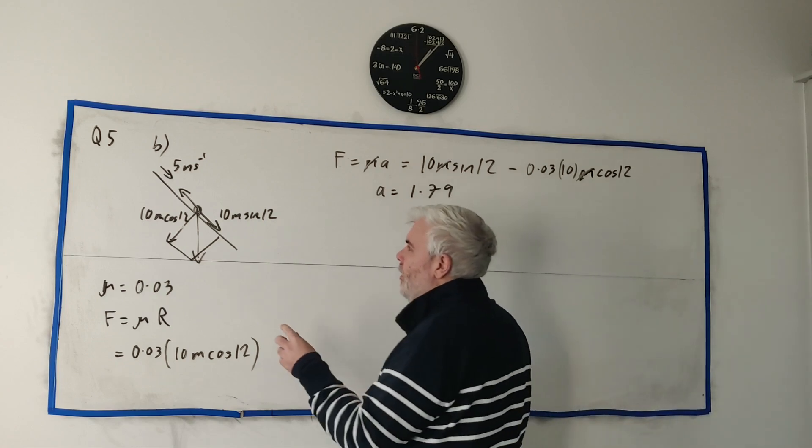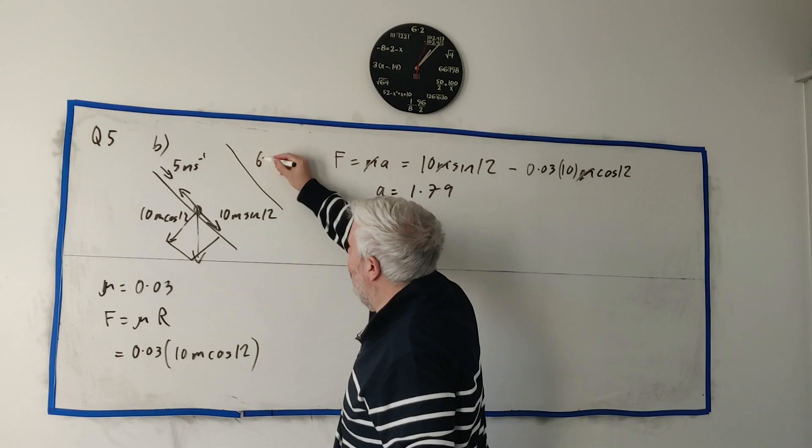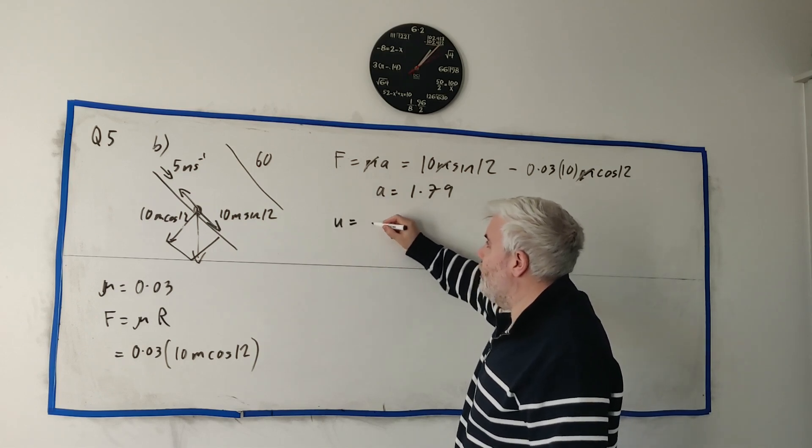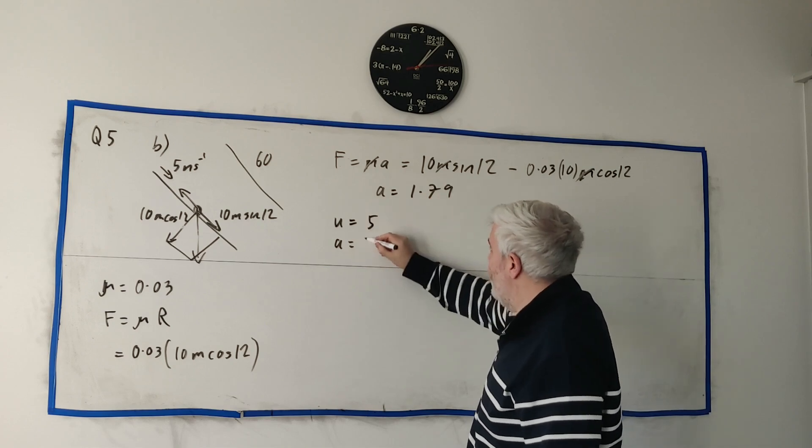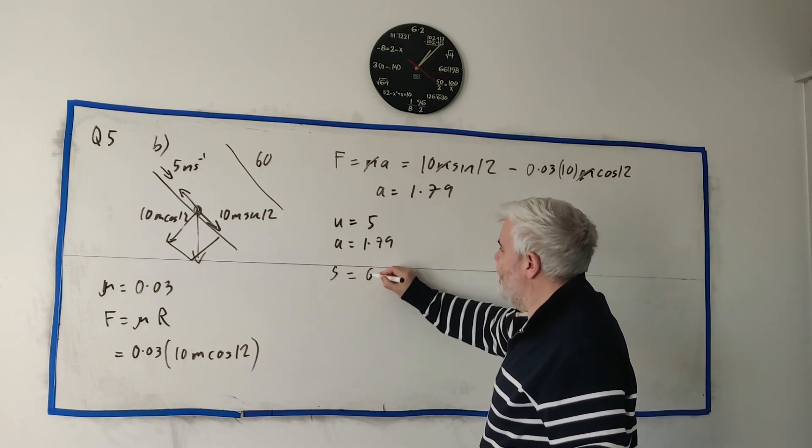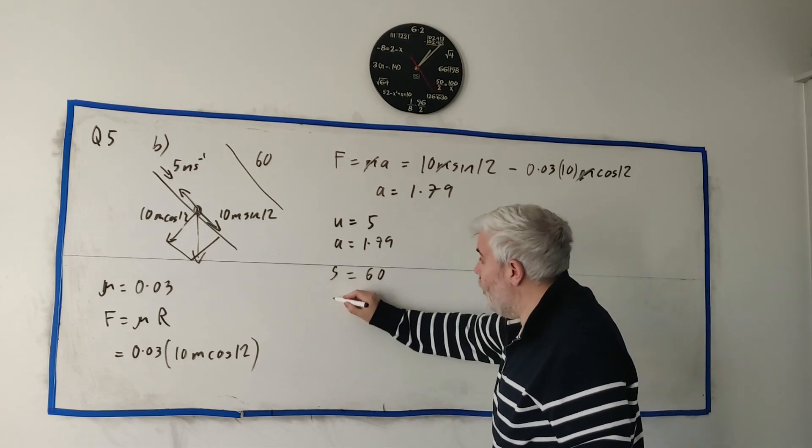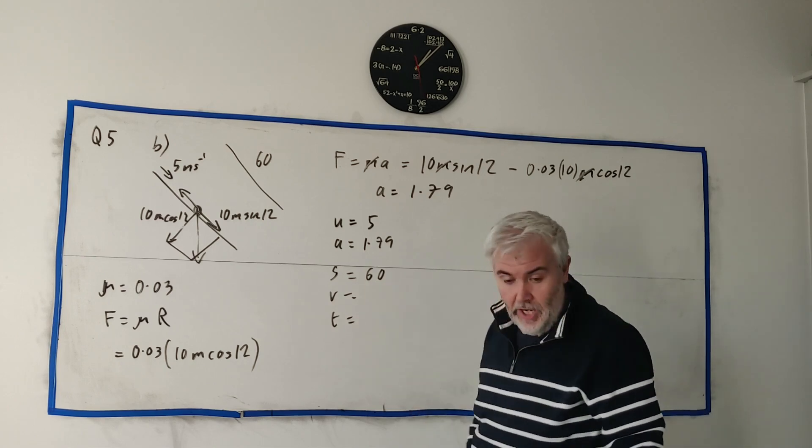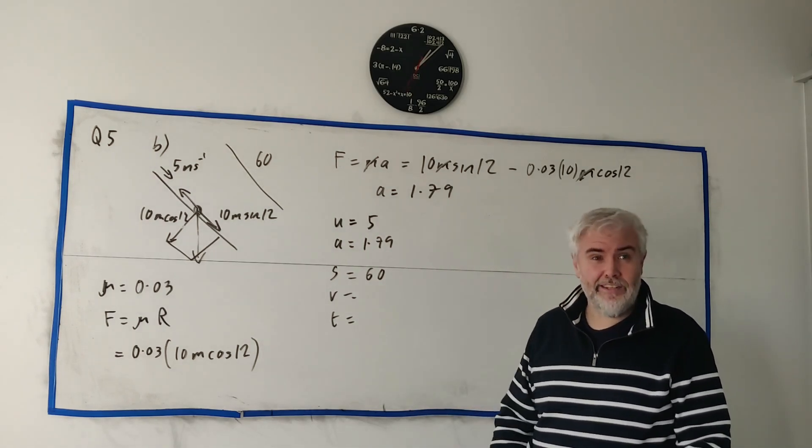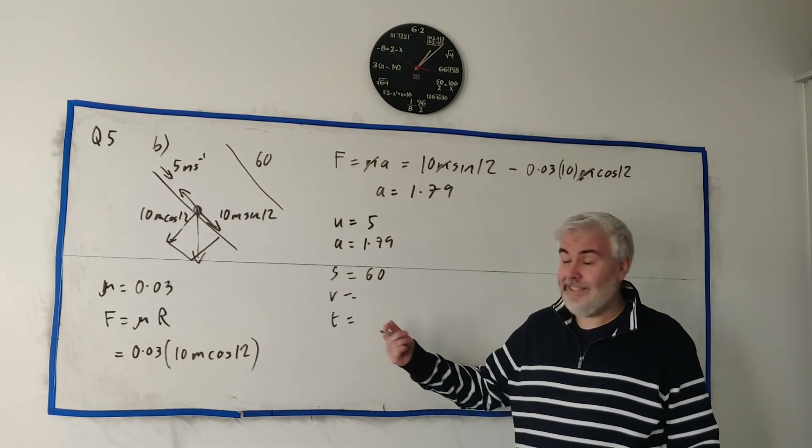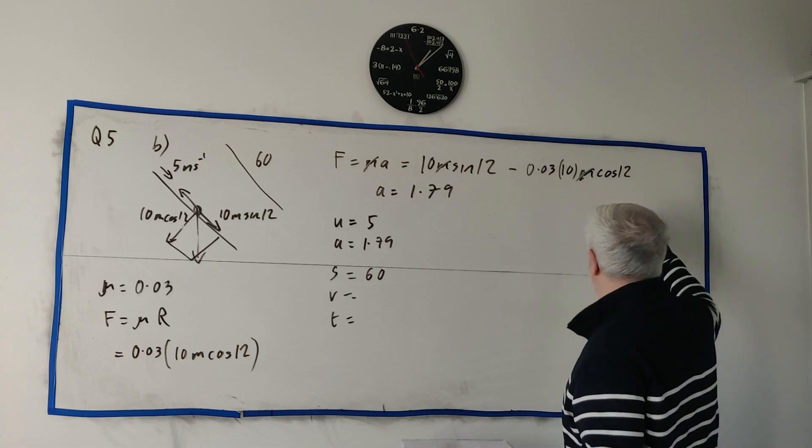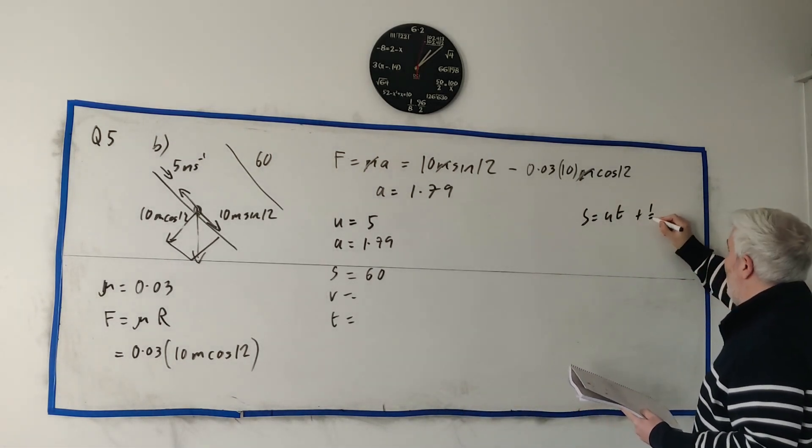What are they asking us to find? They're asking us to find the time it takes to come all the way down this hill that's still 60 meters long. Let's go through our equations of motion again. Initial speed, we know it's 5. The acceleration, we know it's 1.79. Again, I'd be keeping this number in my calculator to use exactly. Distance down the hill, we know it's 60. And we're looking for time. So we don't know v either. Whenever you're doing this, you don't have to find the perfect equation. If you want to find v first, go ahead. And then maybe that makes it easier for you to find t. And that's exactly what happens in this case.